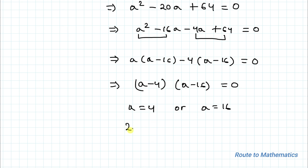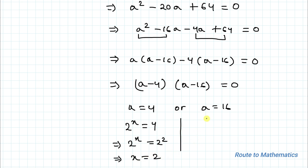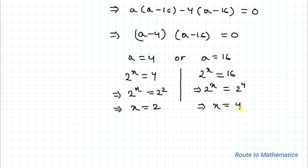Recalling that a equals 2 to the power x: for a equals 4, we have 2 to the power x equals 4, which is 2 to the power 2, so x equals 2. For a equals 16, we have 2 to the power x equals 16, which is 2 to the power 4, so x equals 4.